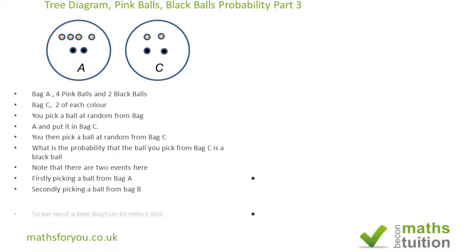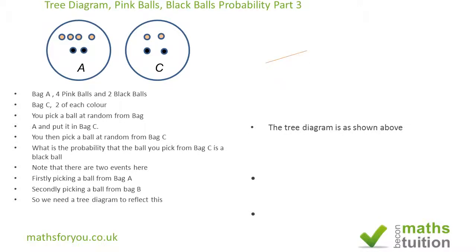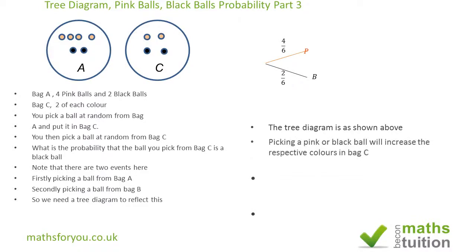We need to draw a tree diagram to show this. Starting with Bag A: because there are four pink balls, the probability of picking a pink ball from Bag A is 4 over 6. Similarly, the probability of picking a black ball from Bag A is 2 over 6.